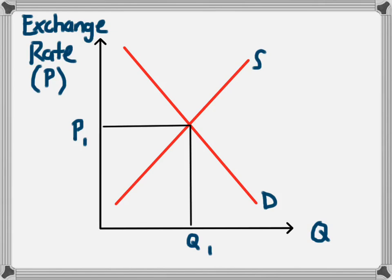In the market for this particular currency, we've got supply and demand leading to an equilibrium of P1 and Q1. In this video, we're going to look at what causes the exchange rate to appreciate, or go up in value, or depreciate, go down in value.